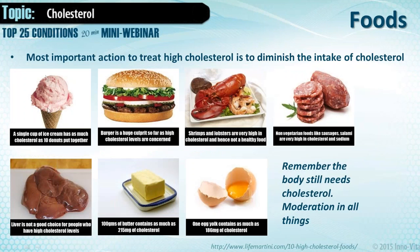A single cup of ice cream has as much cholesterol as 10 donuts put together. A burger is a huge culprit for high cholesterol levels — especially when you think about high protein combined with high carbohydrate creating maldigestion. If we're going to eat beef we should pair it with vegetables like tomatoes, lettuce, and onions. Not only what you eat but also how you digest it matters.